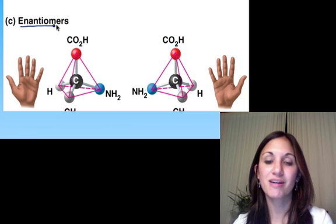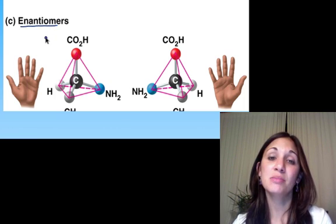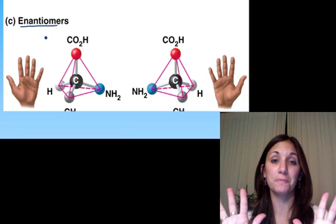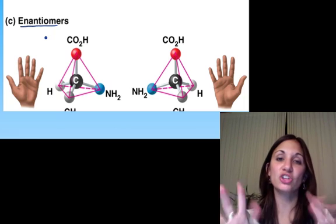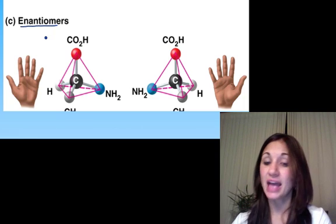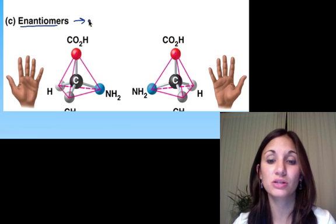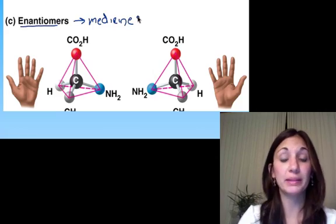And the last type of isomer listed here are enantiomers. Enantiomers are mirror images of each other, like your hands are mirror images of one another. So, the same basic structure, but they're mirror images. And enantiomers have huge implications in pharmaceuticals, so huge implications in medicine.